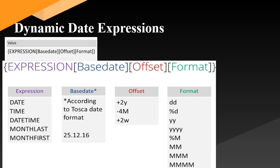For the offset: if you specify +2Y that means it's going to add two years to your expression. If you specify -4M (capital M) it's going to subtract four months. And +2W means it's going to add two working days to your provided value.